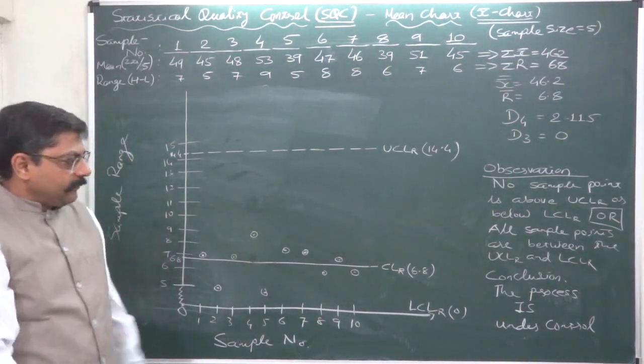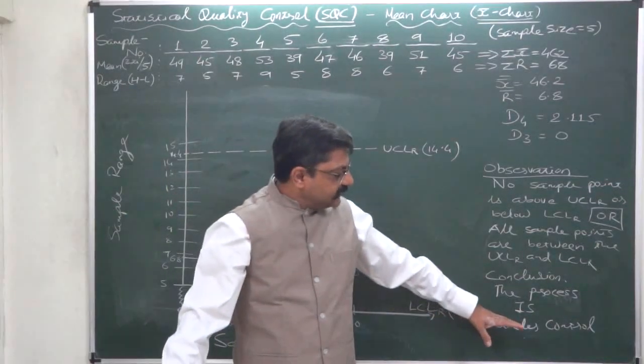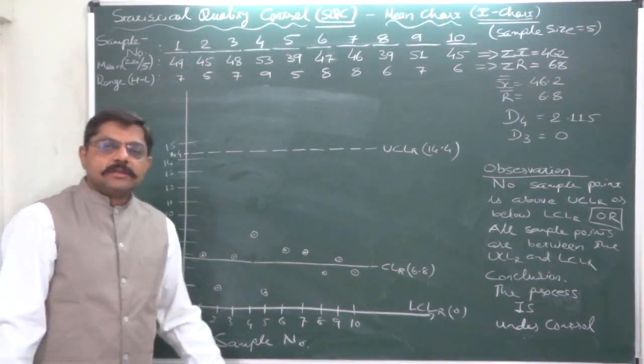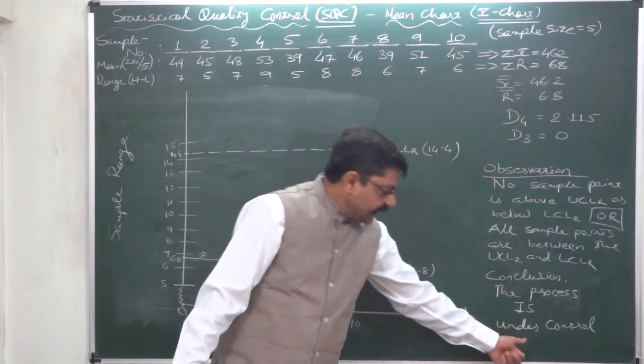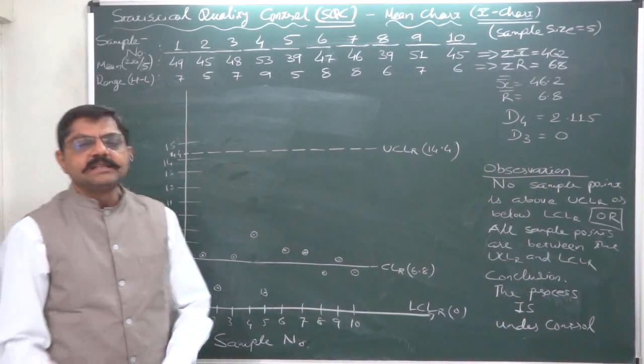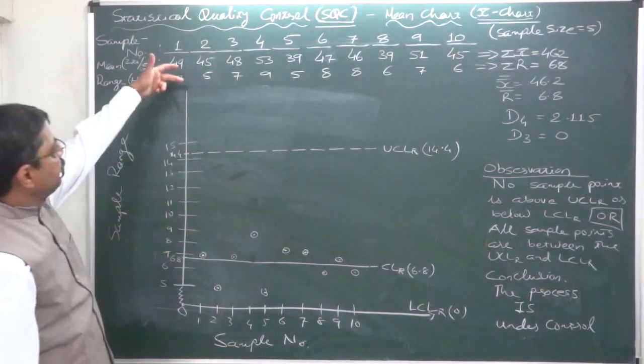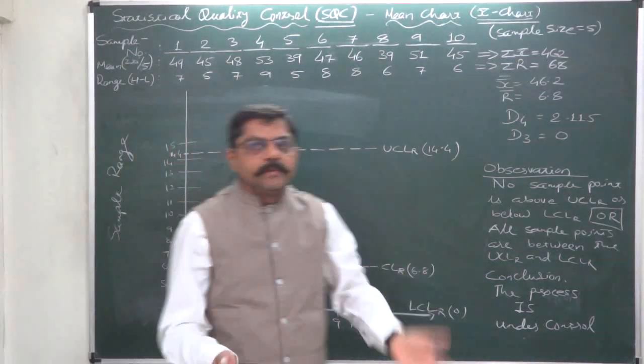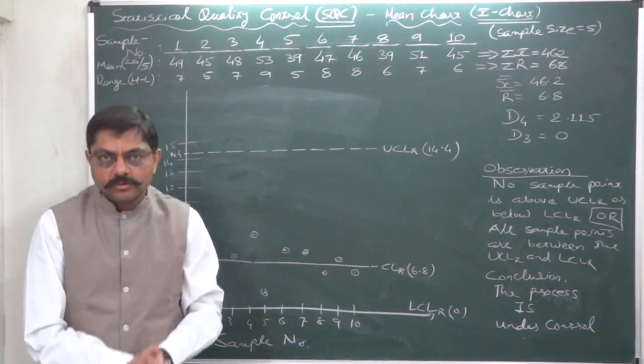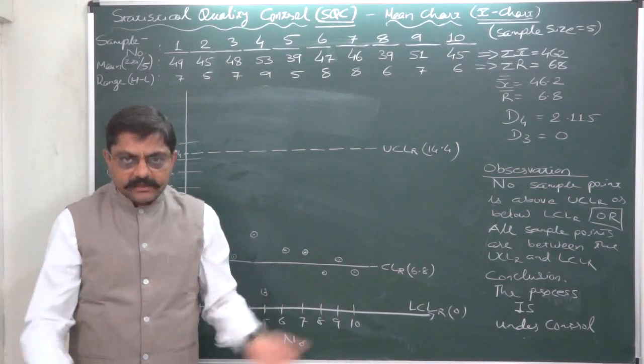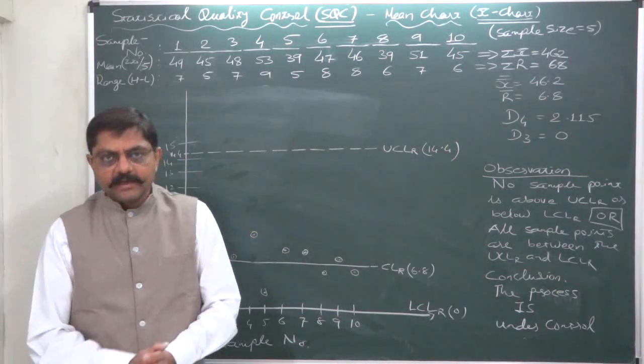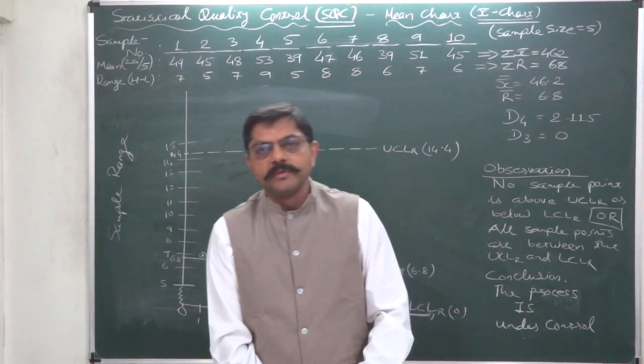For the same problem we got exactly the opposite conclusion in case of mean chart. For this particular case, the conclusion was the process is not under control. And for the same data, for the same problem, the conclusion on the basis of range chart comes to the process is under control. It happens because both are different statistics. According to the nature of the product, nature of the industry, which control chart is suitable for arriving at conclusion is decided by the consultants and the concerned parties.